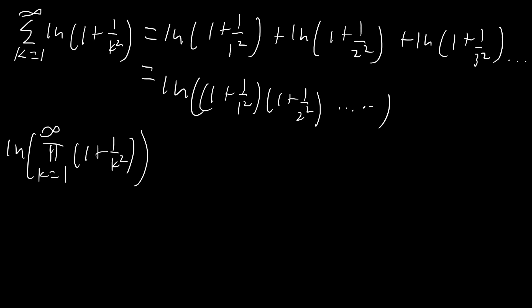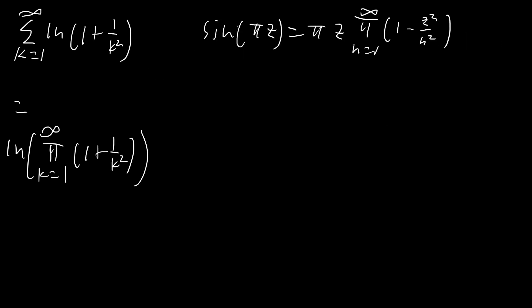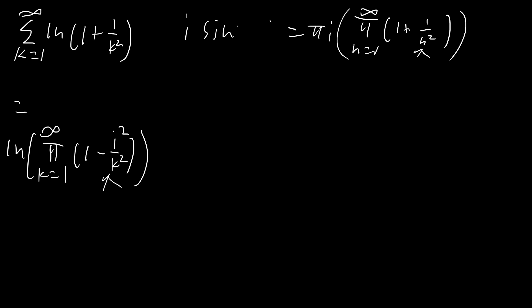Now we use the sine infinite product representation. We have a minus sign and z squared over n squared; we want to make that minus into a plus, so we rewrite it as (1 minus i² over k²), and since i² equals negative 1 we get the same expression. So we substitute z equals i everywhere in the sine product formula. We're now solving for this product — it equals sine(pi·i) divided by (pi·i). The great thing about sine(pi·i) is we can rewrite it as i·sinh(pi), using the hyperbolic sine. Those i's cancel perfectly, and the product equals sinh(pi) over pi.